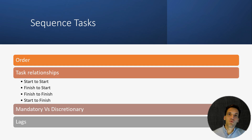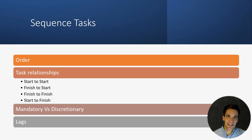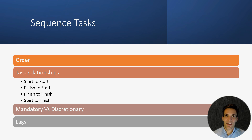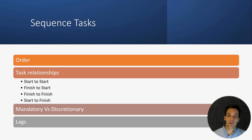Now that we've identified all the work that needs to be done and estimated how long each task will take, the final step is to put them in the correct order. Any project is going to have a defined sequence of activities. You can't just do all the work at once — there's some order to how we have to do it. For building a bridge, we need to do the foundations before we can erect the structure, before we can do the asphalting and roadworks. The sequence is going to drive the overall duration of the project.